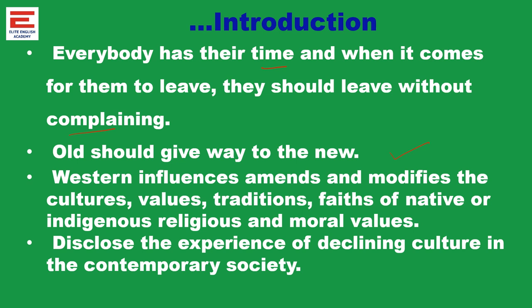At the deeper level, the Western influences amend and modify the cultures, values, traditions, faiths of native or indigenous religious and moral values. This particular idea conveys how post-colonialism emerges. The Western rulers intruded into the native place and tried to impose their own ideals and culture. So the East-West conflict is also there. Finally, this poem discloses the experience of declining culture in contemporary society — how the aged and old are ignored and not given importance. From this context, if you analyze the poem line by line, you can understand it in a better way.